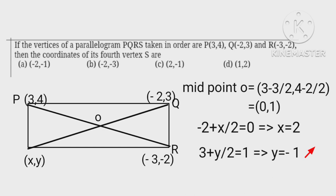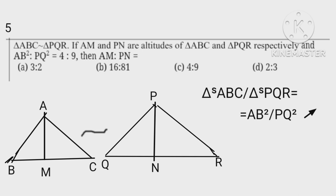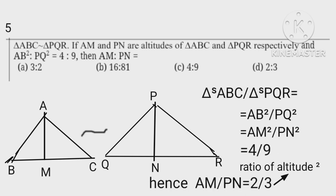Since the two triangles are similar, therefore area of triangle ABC upon area of triangle PQR equals AB squared upon PQ squared, which also equals AM squared upon PN squared equals 4 upon 6. Hence AM upon PN equals 2 upon 3.